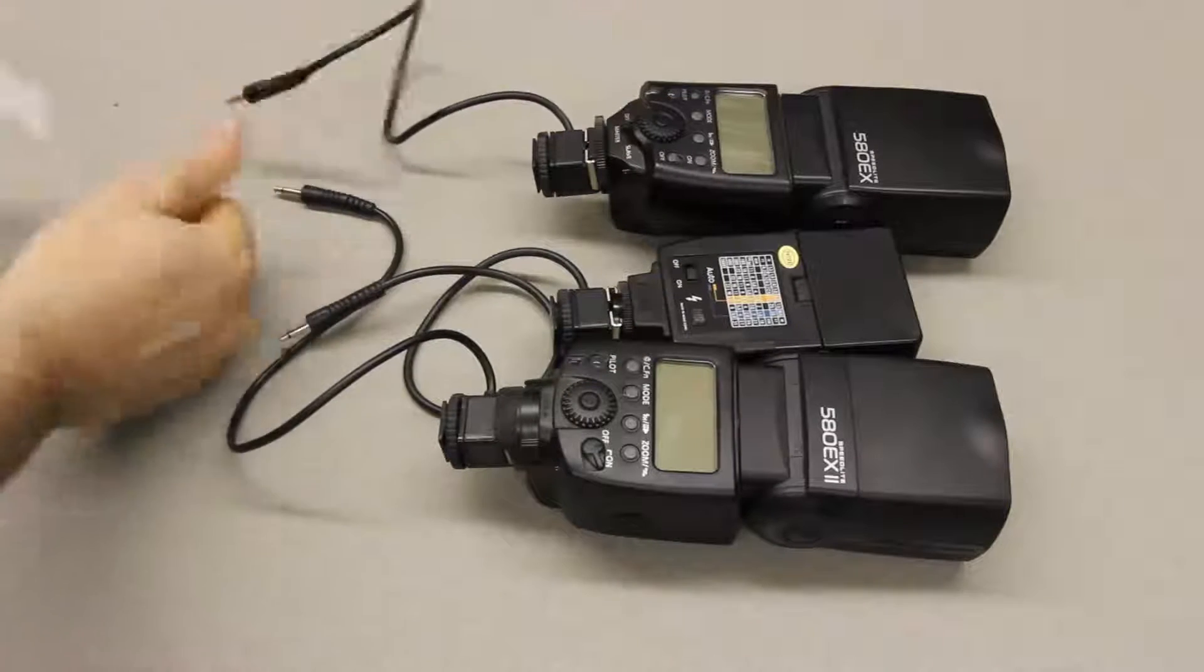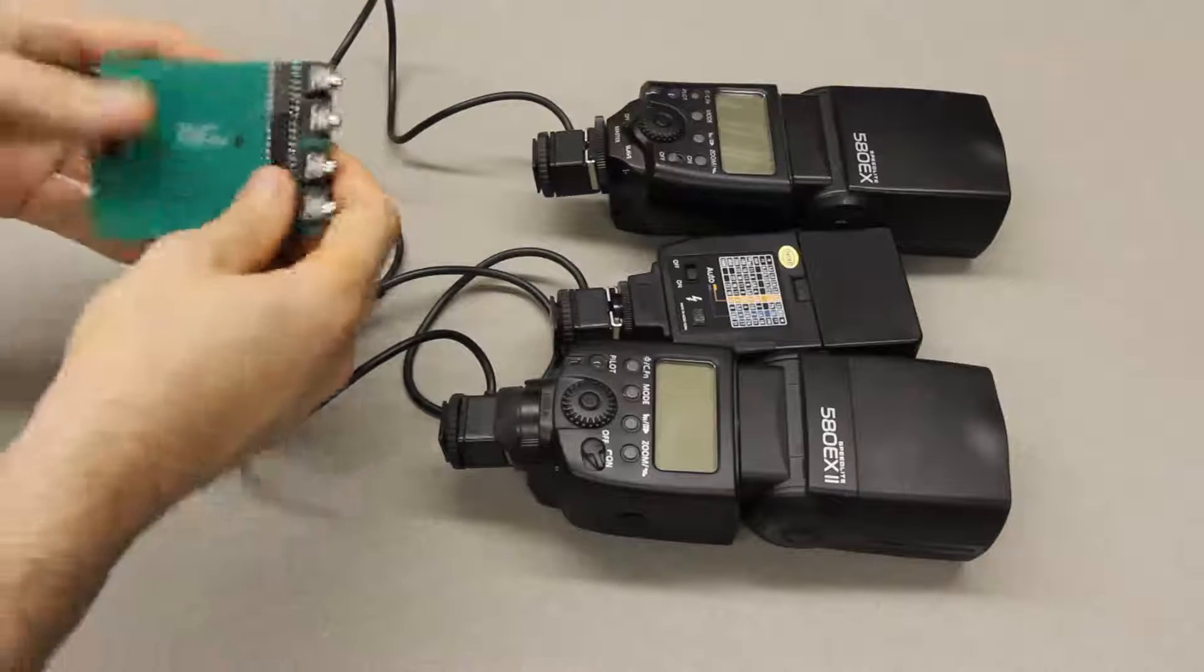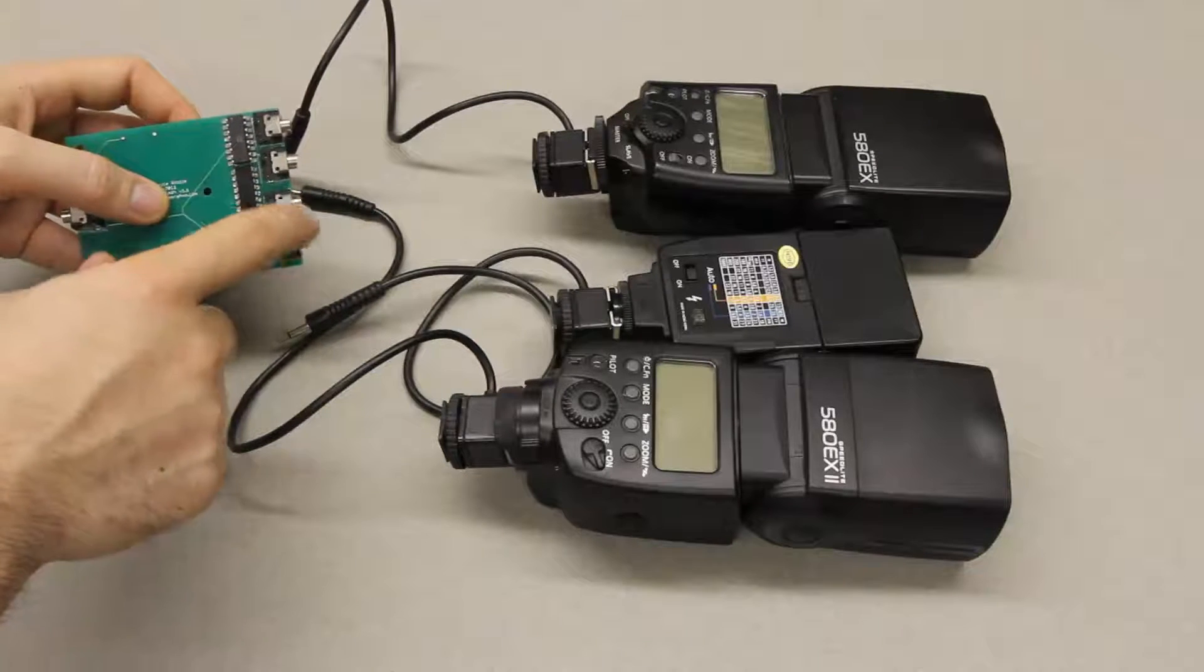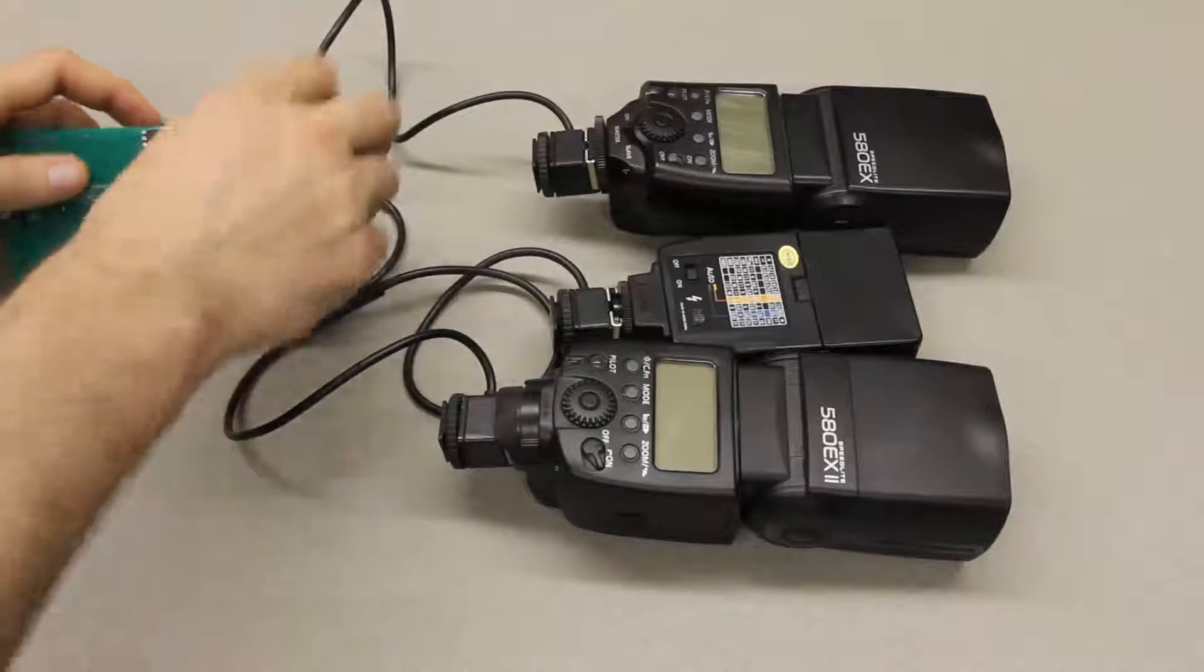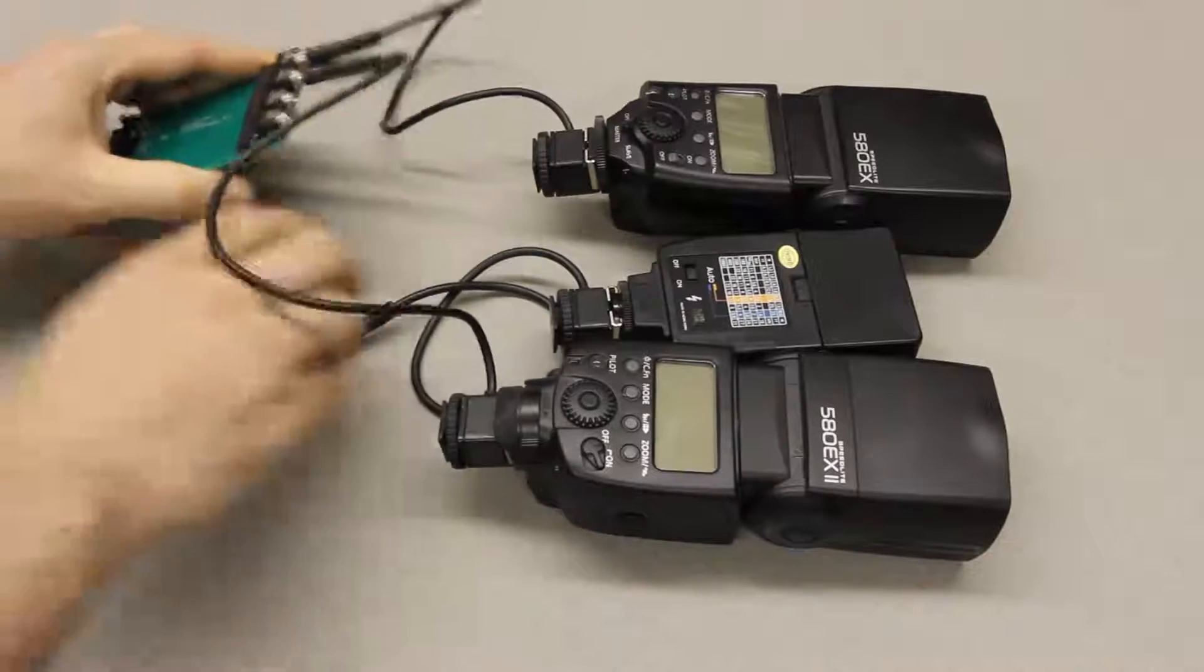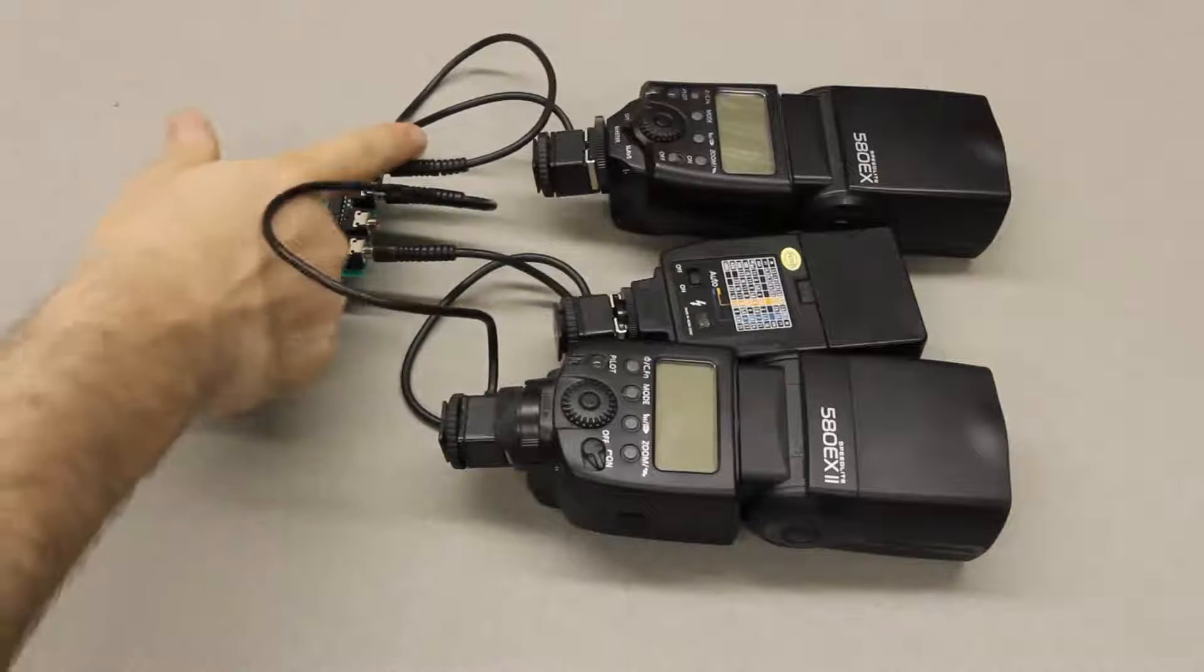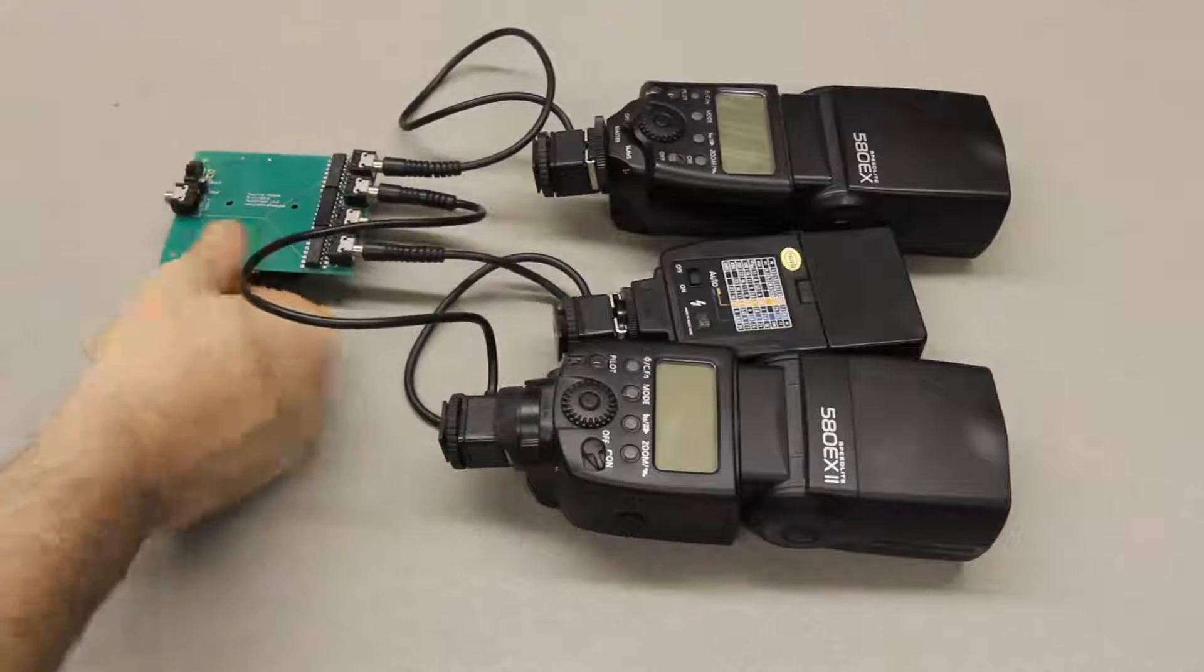So what I've done with the multi flash board is I've got these buffer chips in here that basically isolate each one of these four ports from each other and from the input. So you just take the flashes and plug them into these ports on this side, you can plug them into any ports you want, or you could be plugging cameras into these ports, both will work fine.